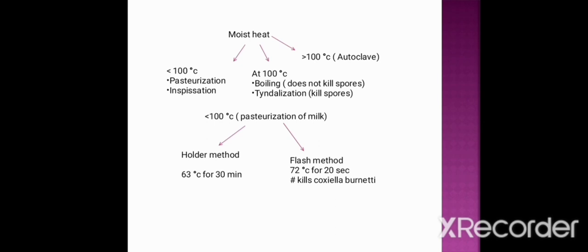From the name, you can understand: in the holder method of pasteurization, you hold for some time — so it is 63 degrees centigrade for 30 minutes. In the flash method, it requires only a flash of time — 72 degrees centigrade for 20 seconds, or it may be 71.7 degrees centigrade for 15 to 20 seconds; both are almost the same. The flash method kills Coxiella burnetii, whereas the holder method is unable to kill Coxiella burnetii. At 100 degrees centigrade (boiling), endospores are not killed.